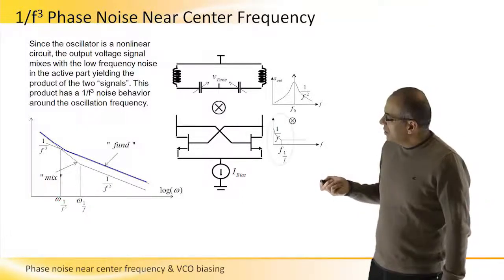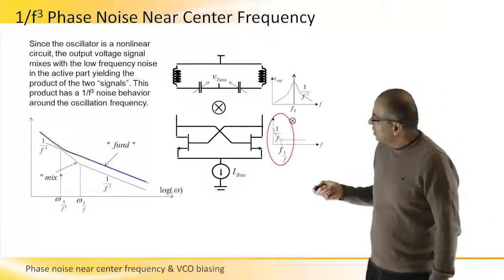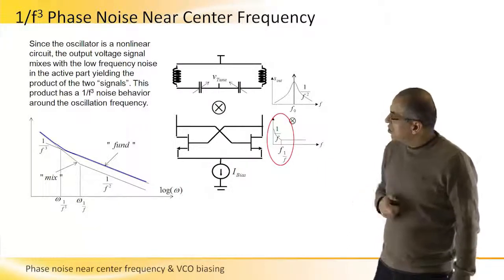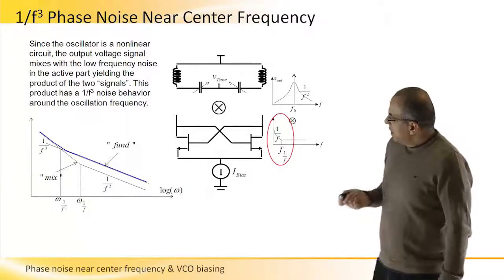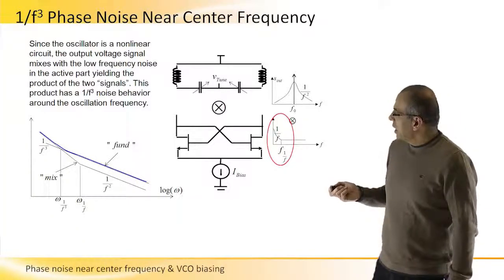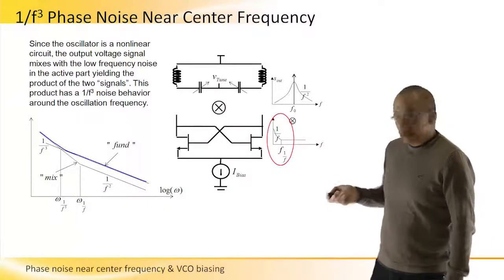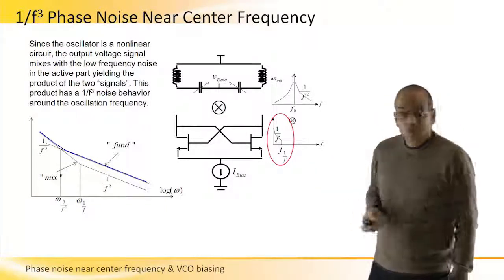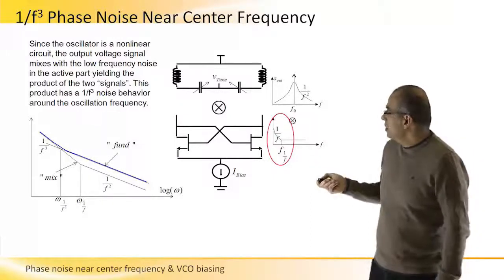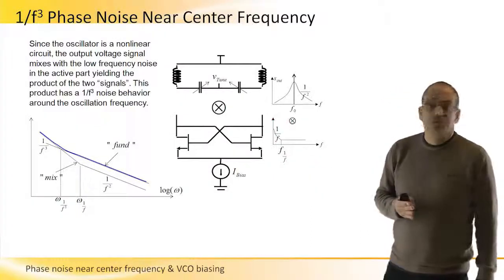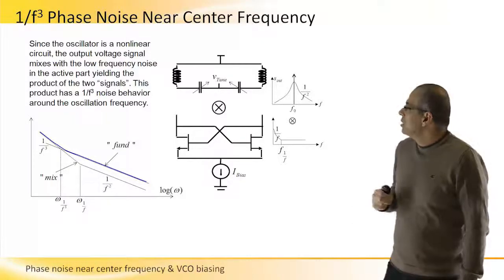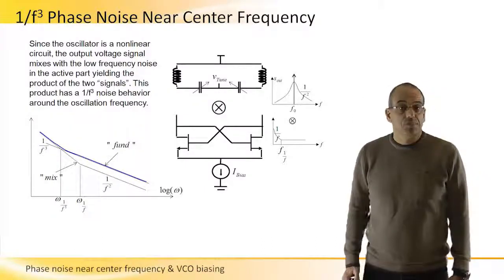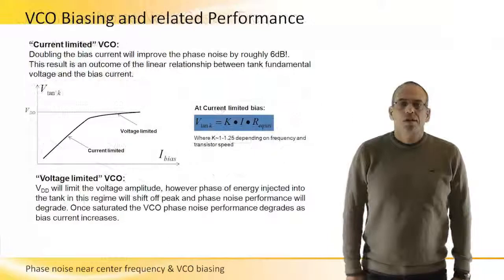From the graph, the frequency where 1/f³ behavior starts to take shape is lower than the 1/f corner frequency generated by the transistors. To reduce it, a good approach is to reduce the 1/f corner frequency, since we know the 1/f³ corner will always be lower. That is a qualitative way to understand how we can reduce this corner frequency.